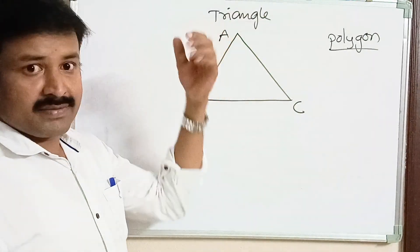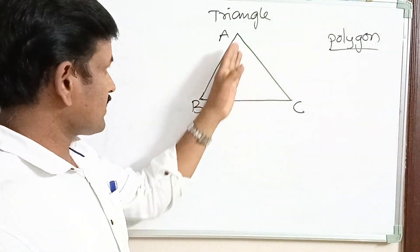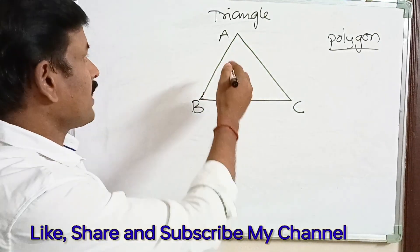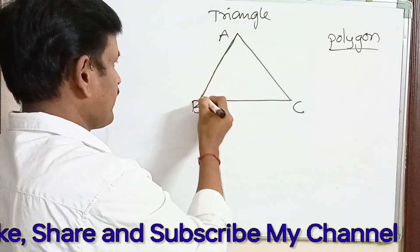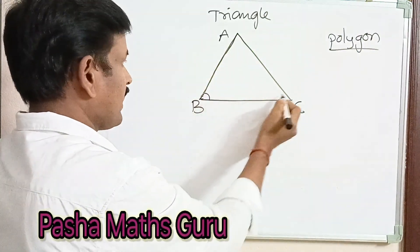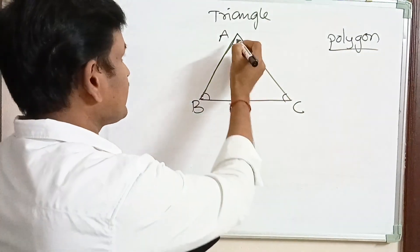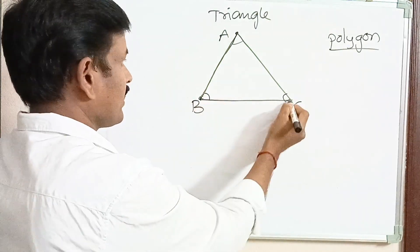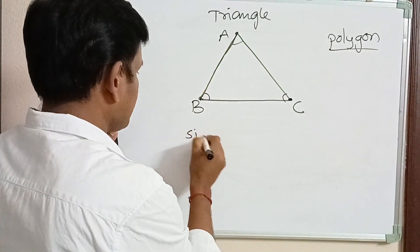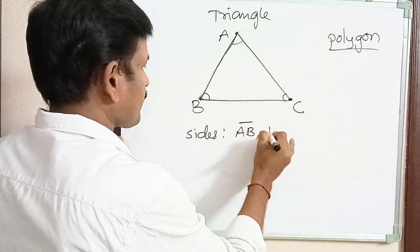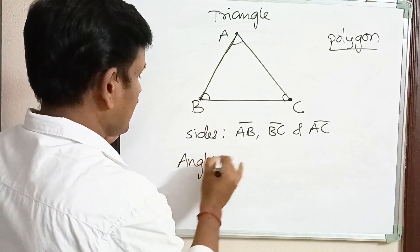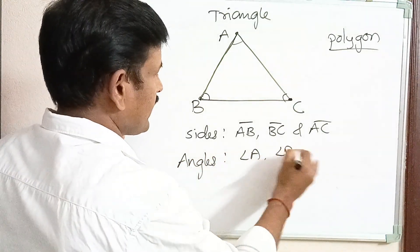The prefix 'tri' means three — a triangle is a three-angled figure, which is why it is called a triangle. If you observe the parts of a triangle, there are three sides: AB, BC, and AC; three angles: angle A, angle B, and angle C; and three vertices, which are the corners of a triangle — vertices A, B, and C.